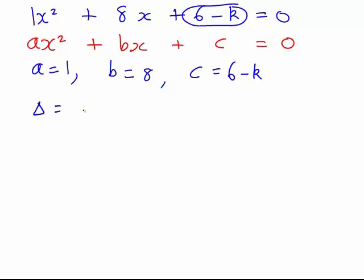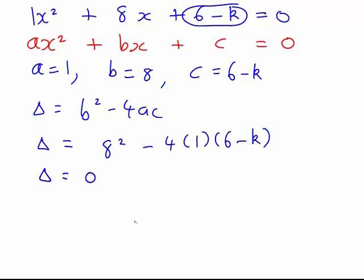If we now work out the discriminant delta, which is b squared minus 4ac, in this case delta is 8 squared minus 4 times 1 times 6 minus k. Furthermore, we want a case where these graphs meet at a single point, which would be the case when our quadratic has one solution only. That occurs when delta equals 0.